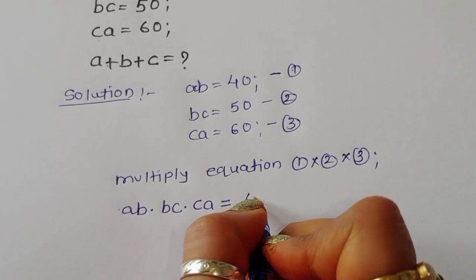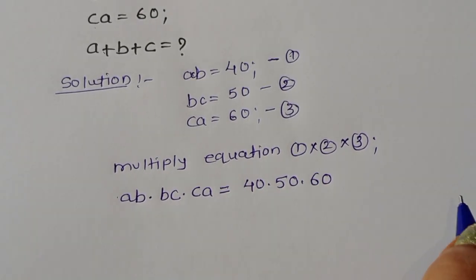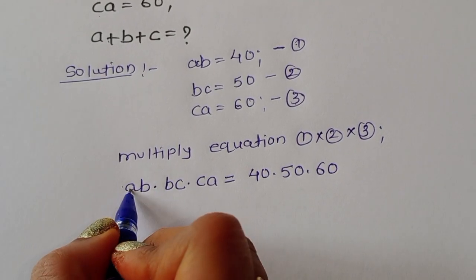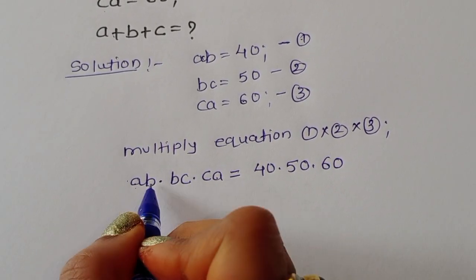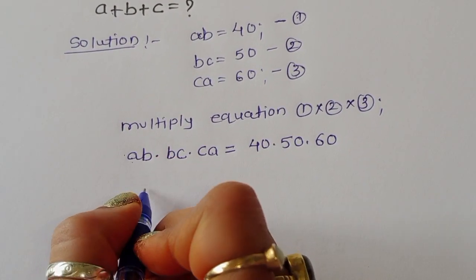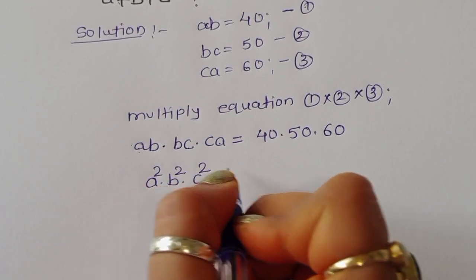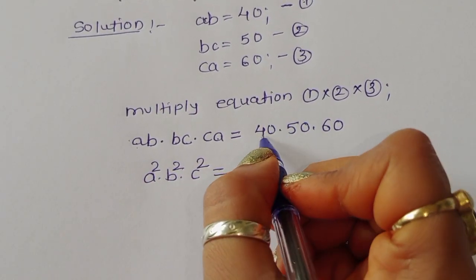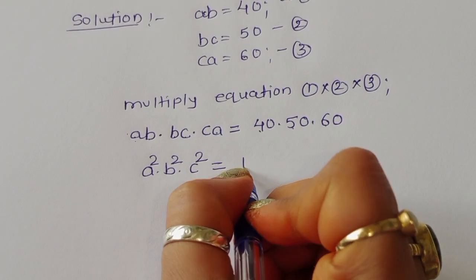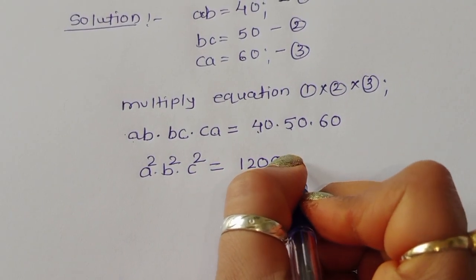Multiplying equations one, two, and three: ab times bc times ca equals 40 times 50 times 60. On the left side, we get a²b²c². On the right side, 40 × 50 × 60 = 120,000.